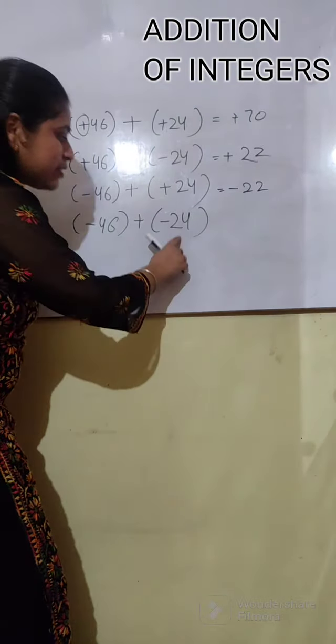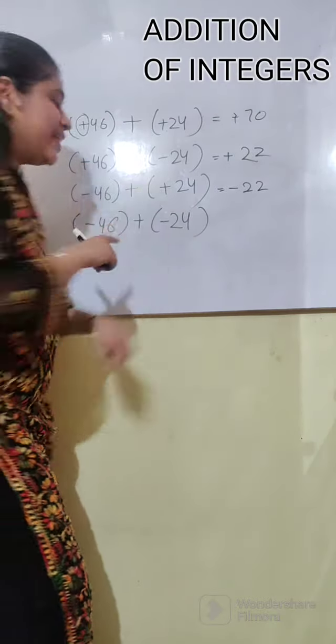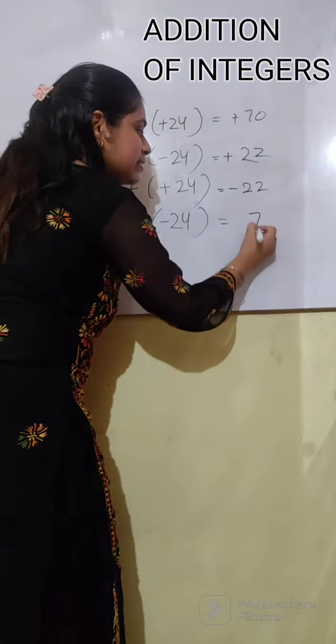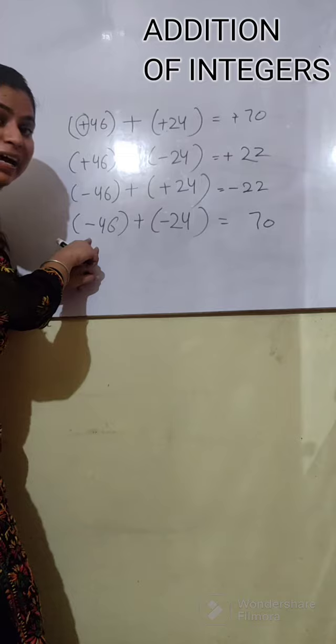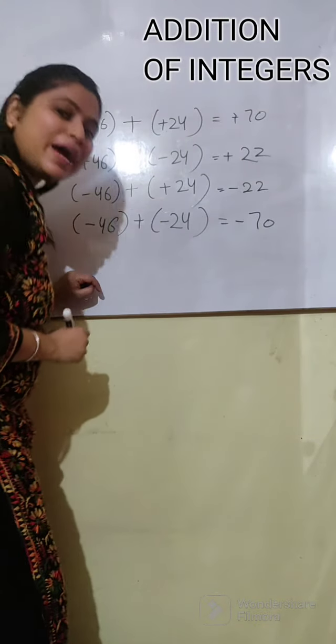Now, minus 46 minus 24? Minus minus equals plus. 46 plus 24? That is 70. But, what sign is on the big number? Minus. So what is the answer? Minus 70.